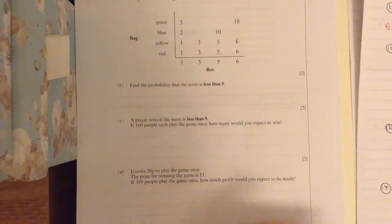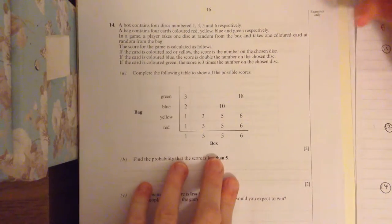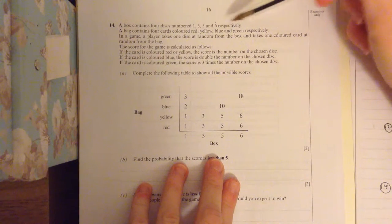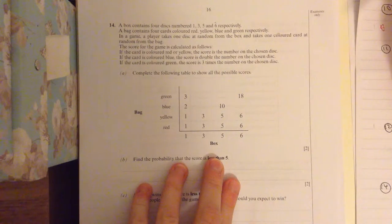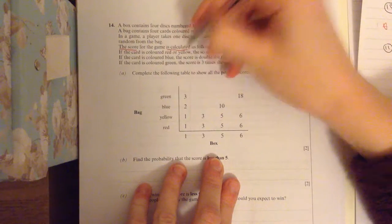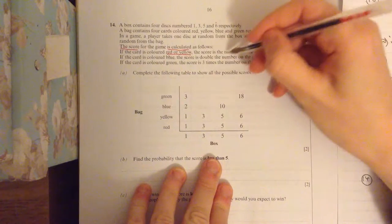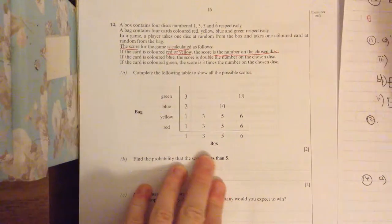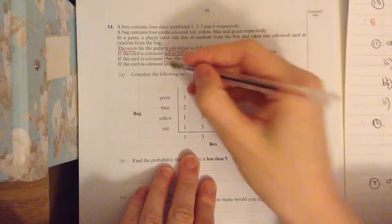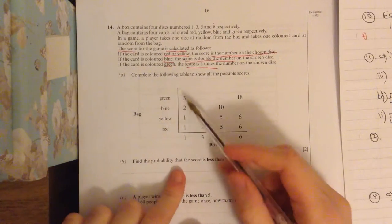Question 14. Sample space diagram, probability. So it contains four numbered discs: 1, 3, 5 and 6. And four cards: red, yellow, blue and green. Take one disc and one coloured card. Always look for the bit that says the score. So the score is calculated as follows. If the card is red or yellow, the score is the number on the chosen disc. Always keep out your key bits first. If it's blue, the score is double the number. If it's green, the score is three times the number. So now let's fill in our sample space. So that's all done for you.